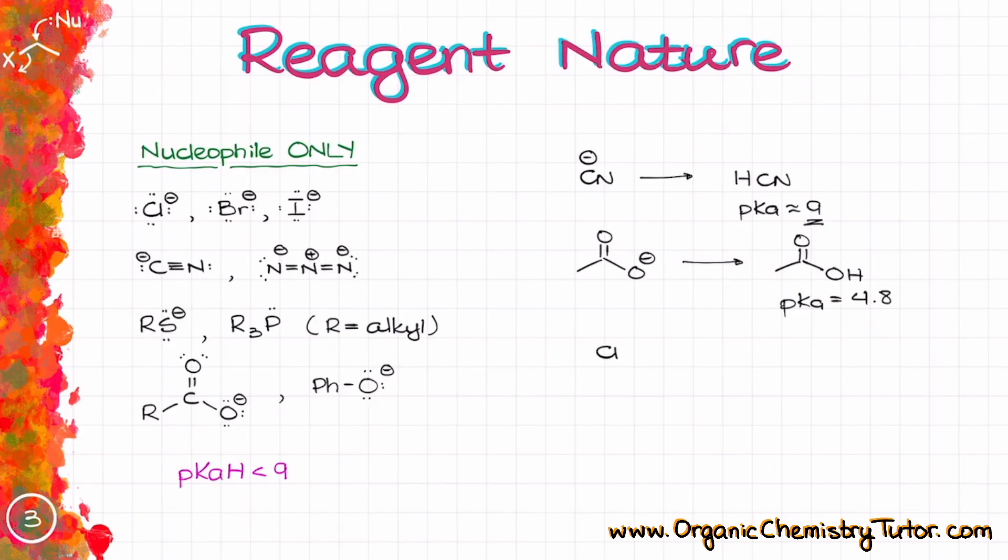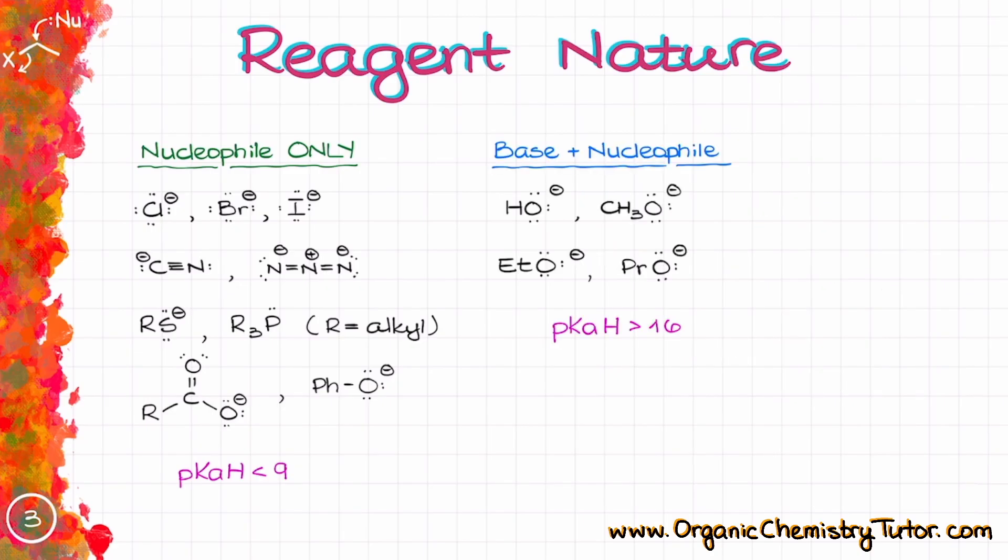If I look at something like Cl-, well for that one, the conjugate acid is going to be HCl and the pKaH value for HCl is going to be somewhere around negative 7. That means that HCl is a very strong acid. So as a base, Cl- is going to be a rather weak base. So we are not going to be really expecting our Cl- to perform any kind of acid-base chemistry in the reaction.